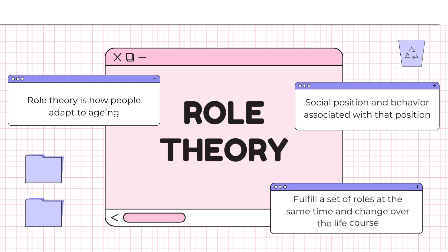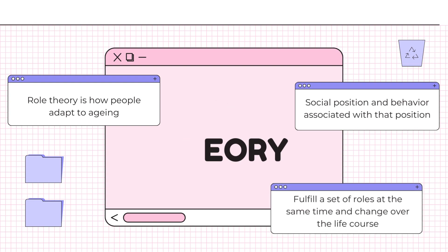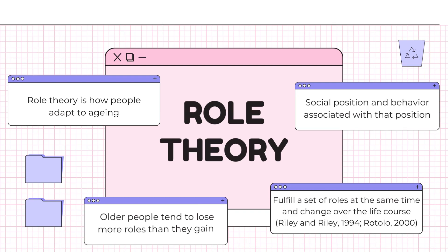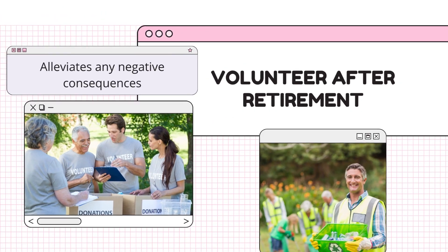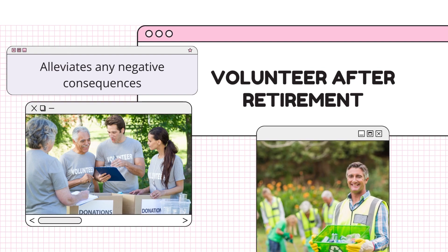People often fulfill a set of roles at the same time — for example, mother, director, and child — and this set may change over the life course. Older people tend to lose more roles than they gain, such as losing roles of parent, spouse, worker, and active member of society. Volunteering and helping others can act as substitutes for roles lost over the life course. For example, becoming a volunteer after retirement may alleviate any negative consequences associated with losing the worker role.